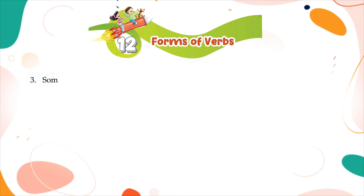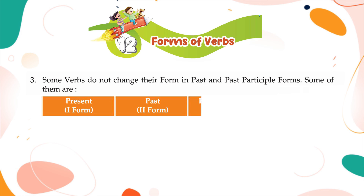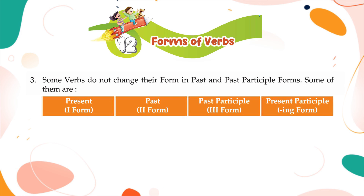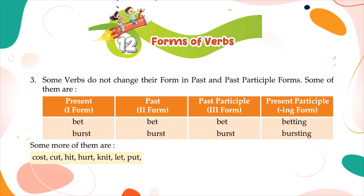Some verbs do not change their form in past and past participle forms. Some of them are: present (first form), past (second form), past participle (third form), present participle (ing form). Bet, bet, bet, betting. Burst, burst, burst, bursting. Some more of them are: cost, cut, hit, hurt, knit, let, put, rid, set, shut, spread.